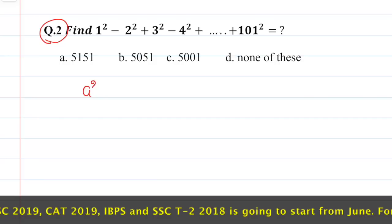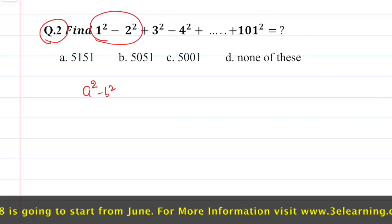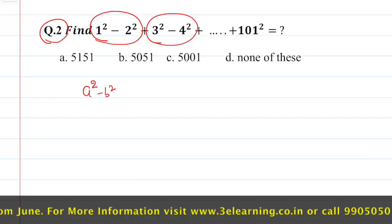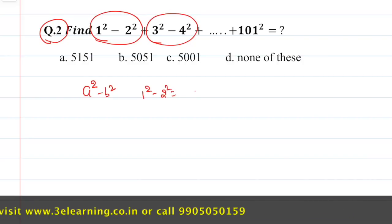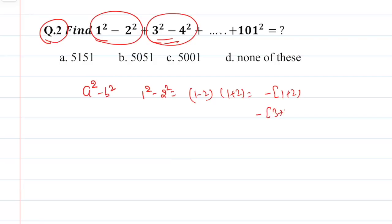This means we use formula a² minus b². If you look at the first pair and see the second pair, then you will see it. 1² minus 2² is nothing but (1 minus 2) into (1 plus 2) is nothing but minus 1 plus 2. Similarly, 3² minus 4² is minus 3 plus 4.